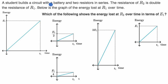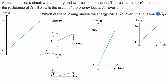A student builds a circuit with a battery and two resistors in series. The resistance of R2 is double the resistance of R1. Below is the graph of the energy lost at R1 over time. Which of the following shows the energy lost at R2 over time in terms of E1? We have four choices. Pause this video and see if you can figure it out on your own.